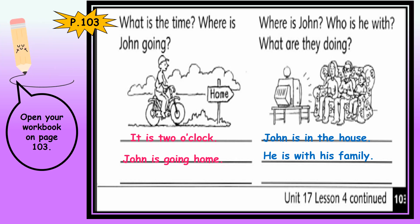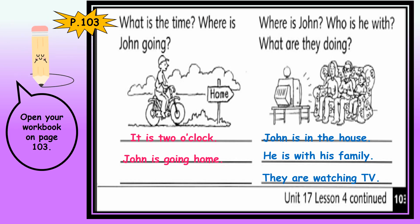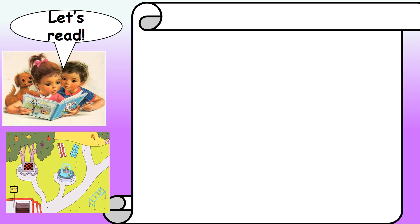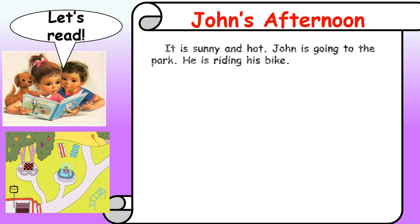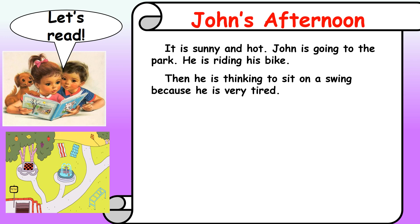And what are they doing? They are watching TV. Now for our last part, children, we will practice how to read the composition. 'John's Afternoon.' It is sunny and hot. John is going to the park. He is riding his bike. Then he is thinking to sit on a swing because he is very tired.